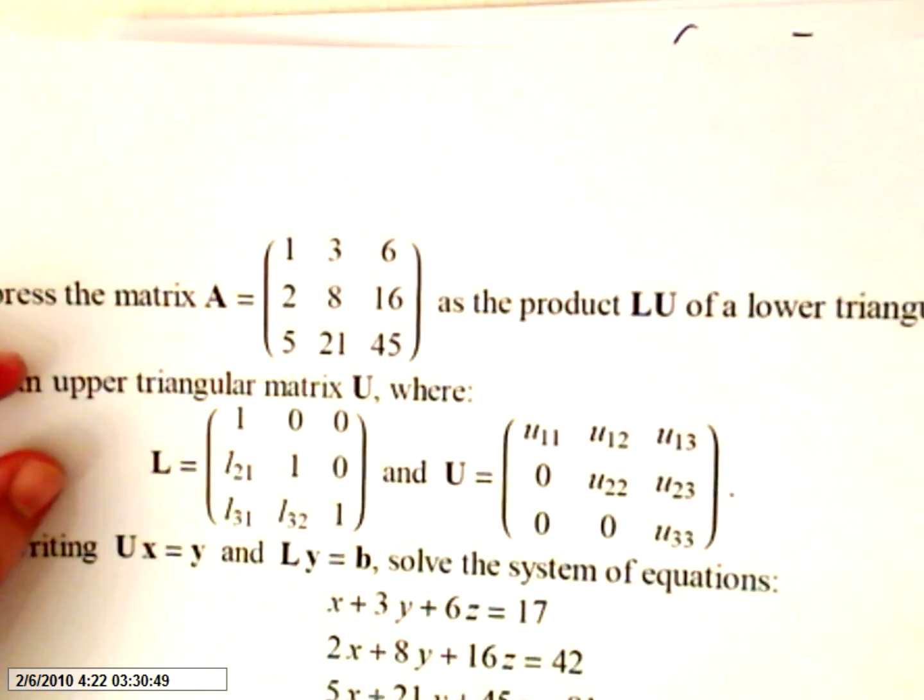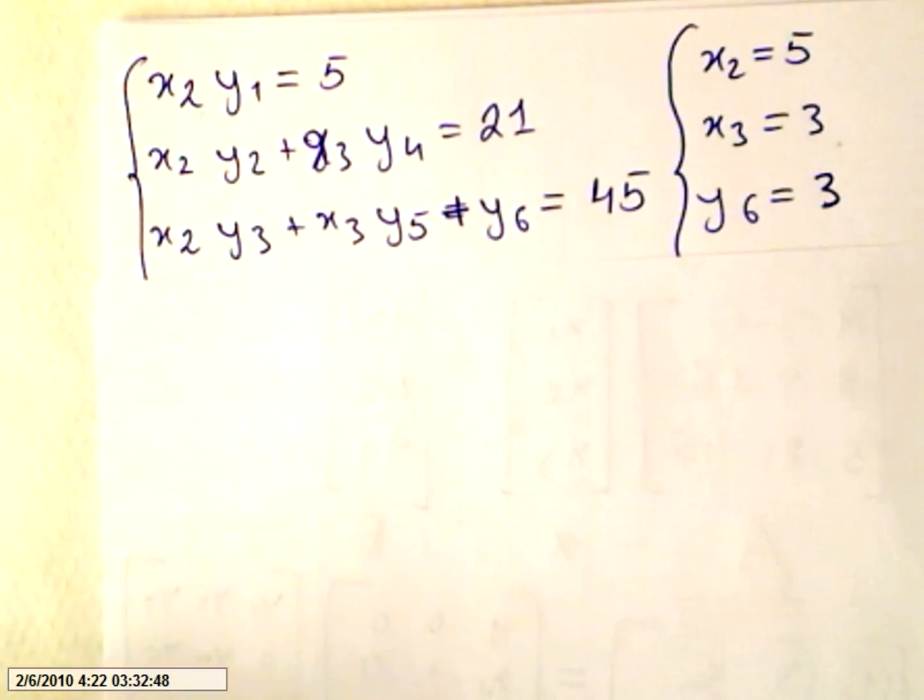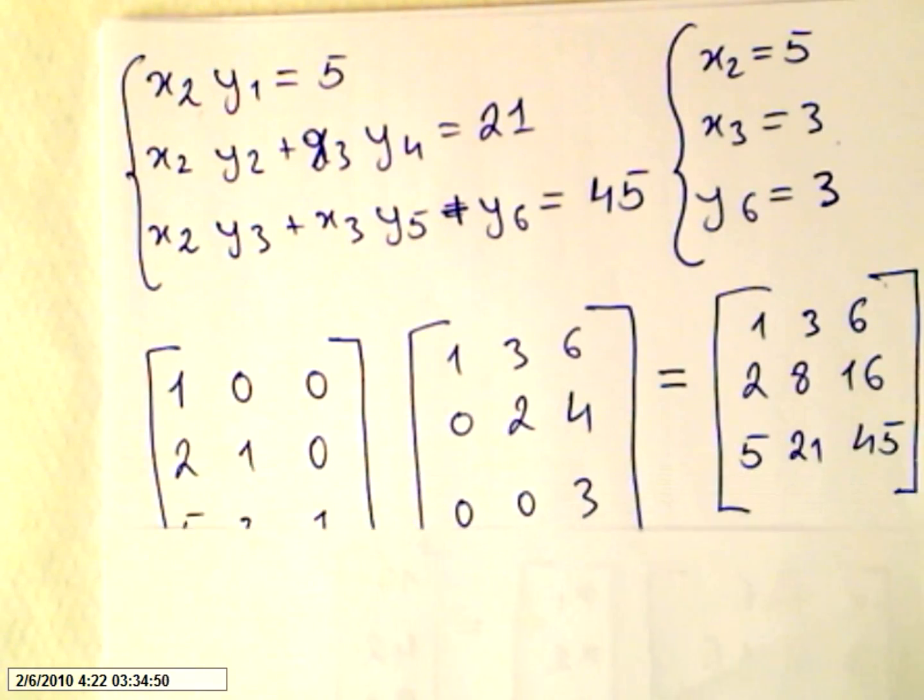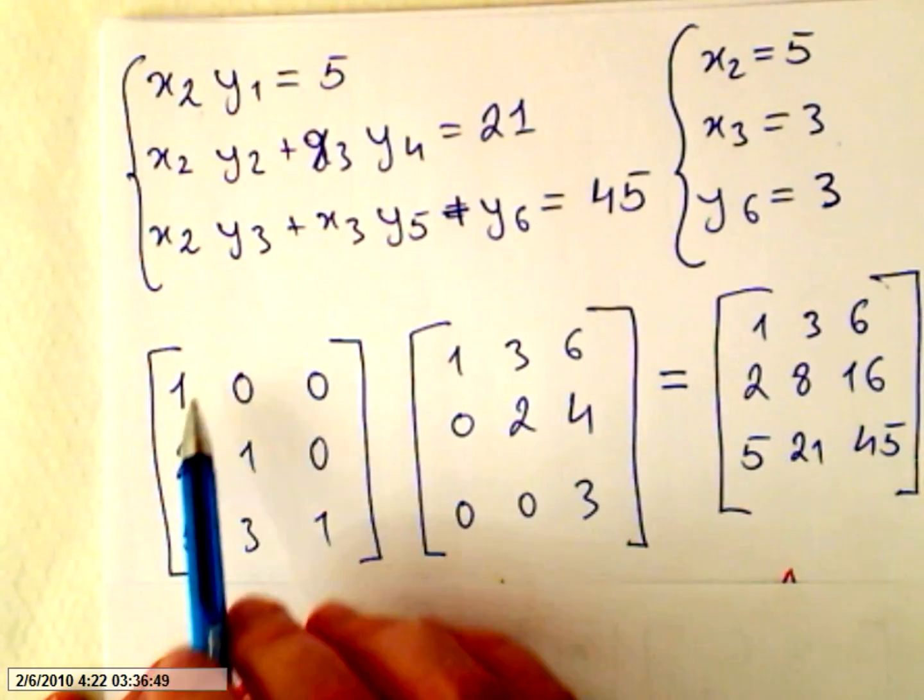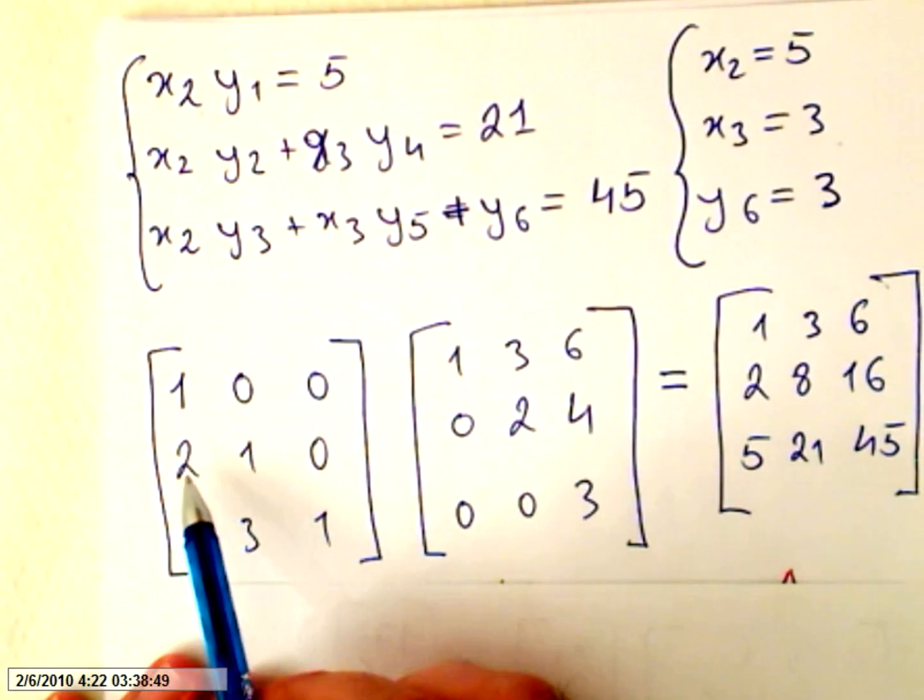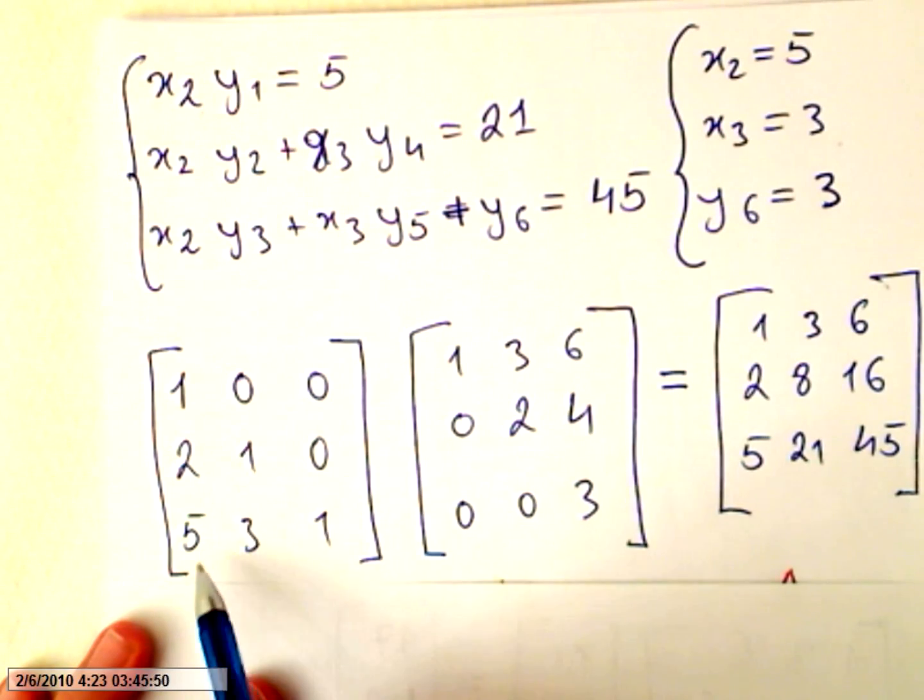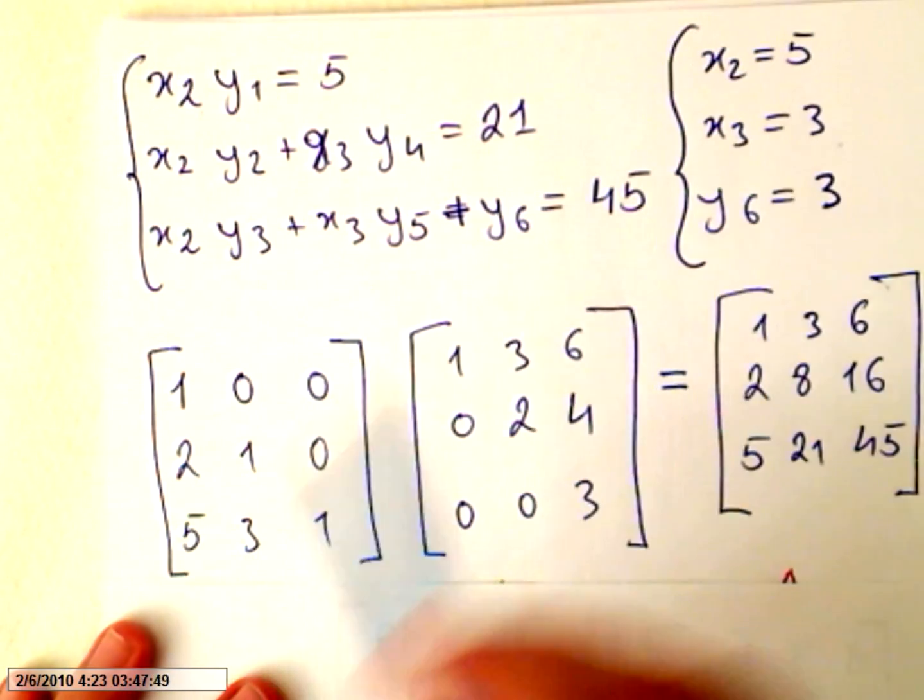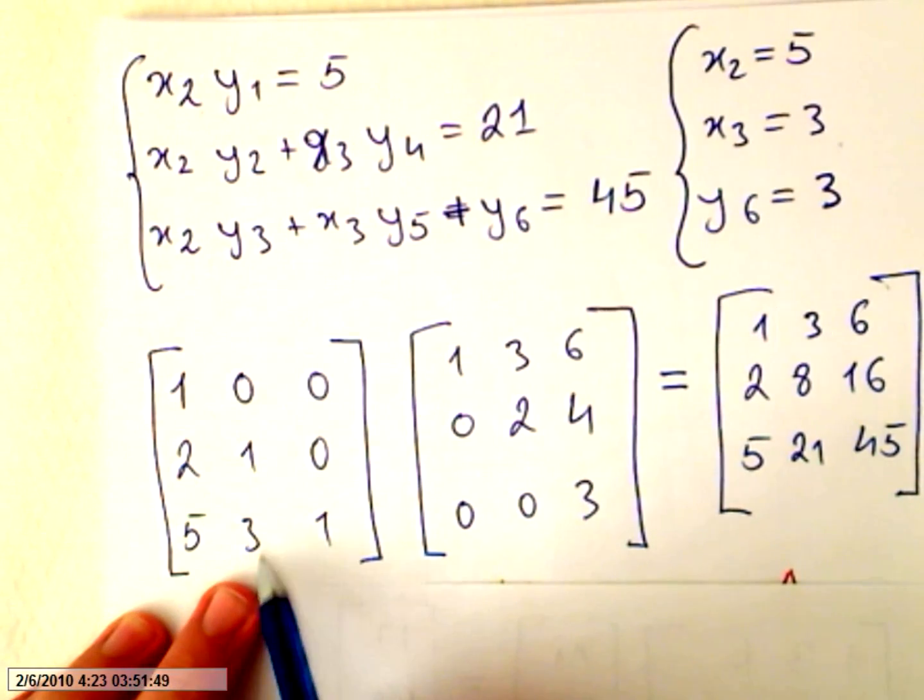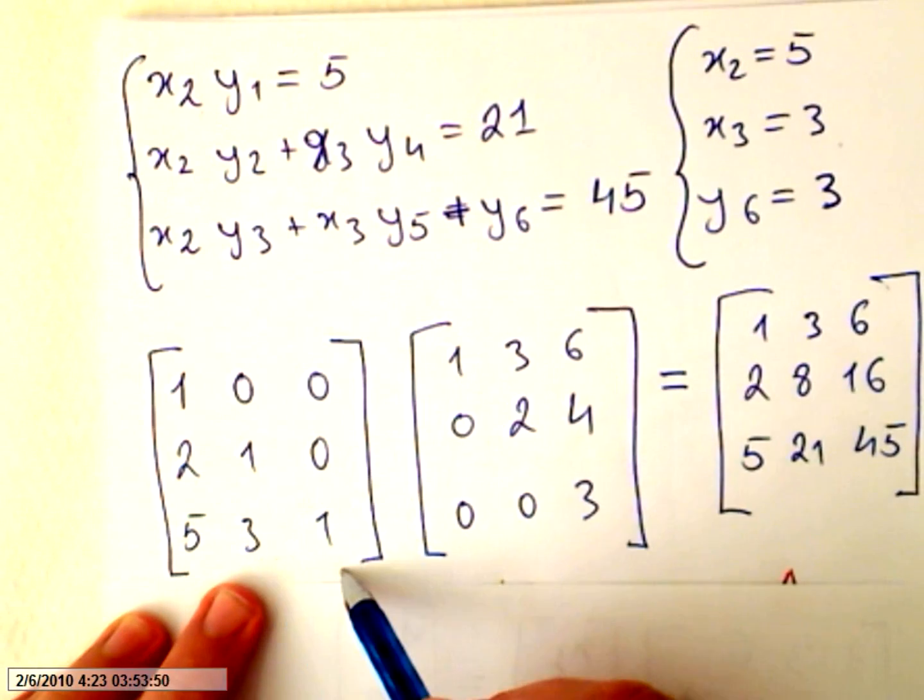Now if all this is true, replacing the values: we had 1, 0, 0, and this was x1, we found x1 was 2. And this was x2, and x2 is 5. x3 is 3.